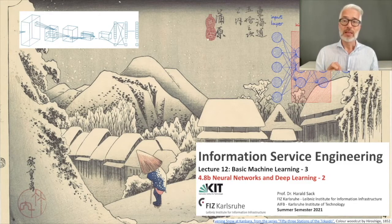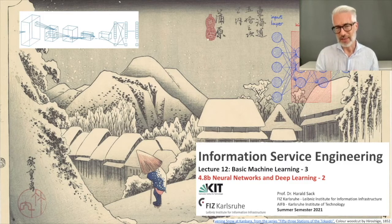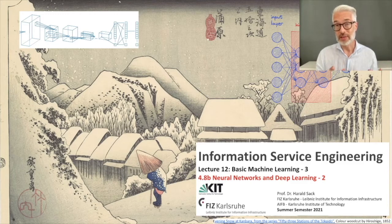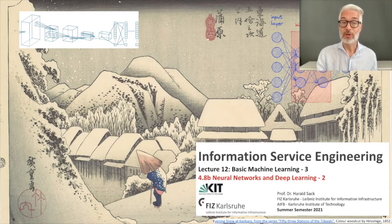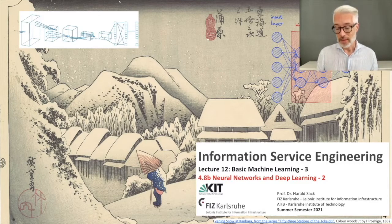One drawback of multi-layer neural networks was feature engineering — figuring out what to feed into the network to make the decisions you want. This was crucial especially for image recognition, which was also the field where the first convolutional neural networks had their success. Feature engineering was transferred to the network itself, which learned to do it based on primitive convolutional operations and pooling operations.